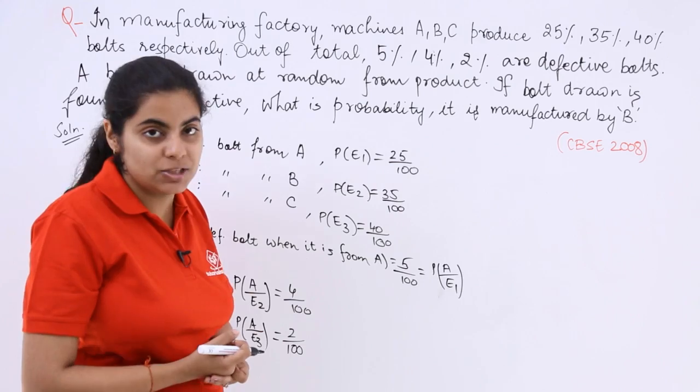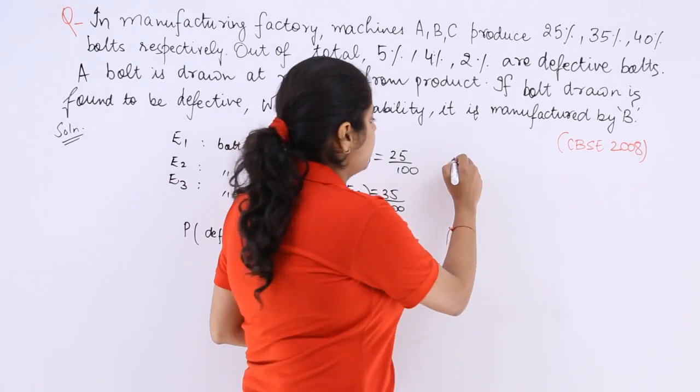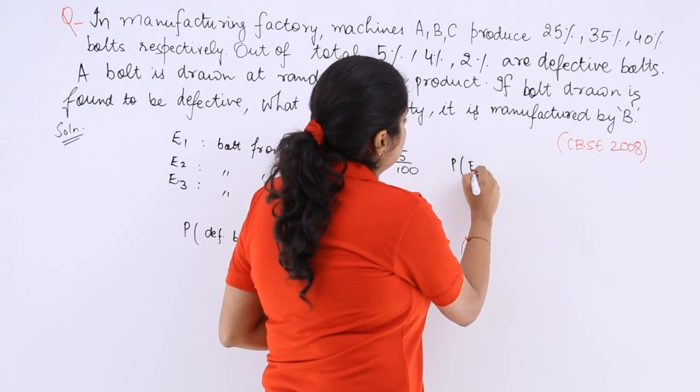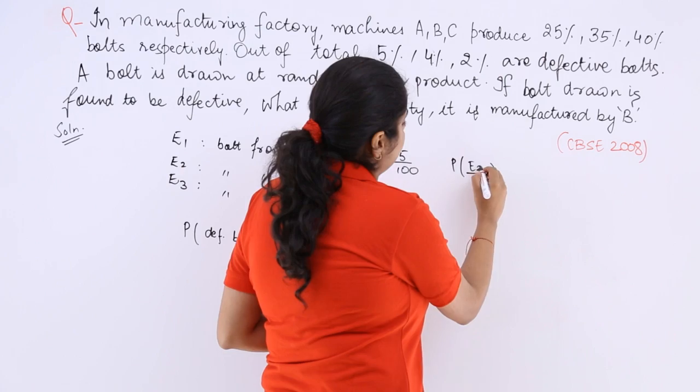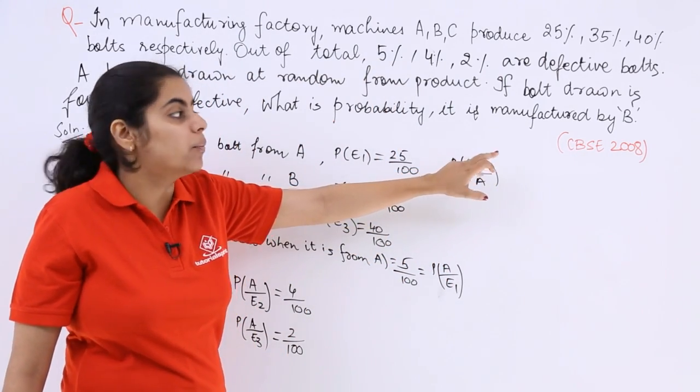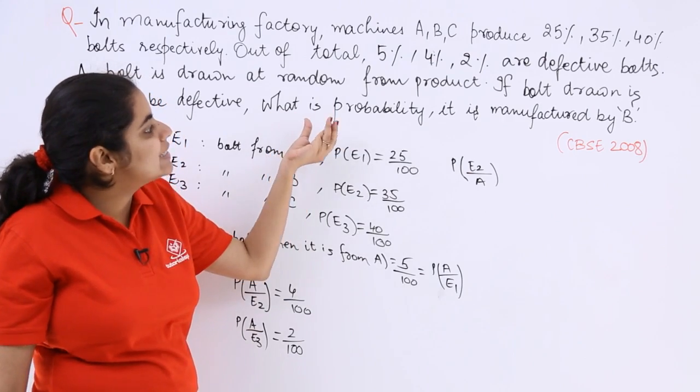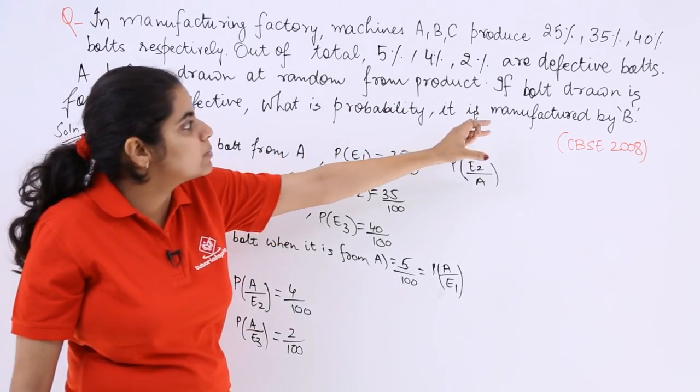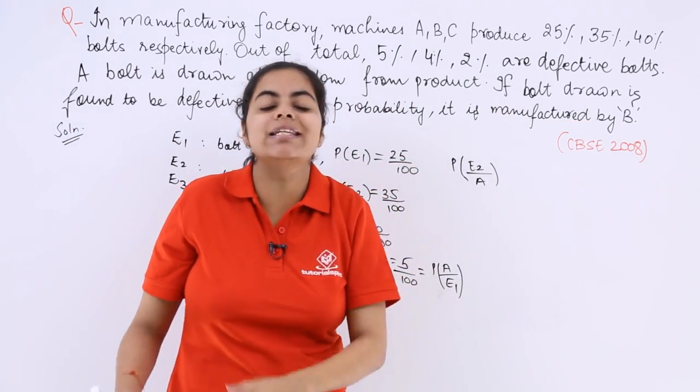So we have to see P(E2) with respect to A, that we have to find out the probability it is manufactured from B, and we know that it has been denoted that the bolt drawn is defective.